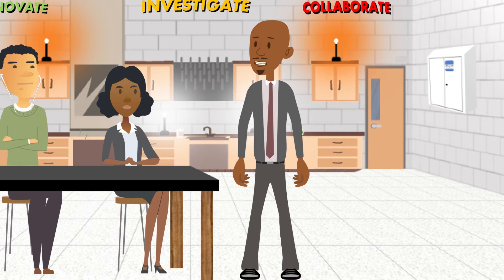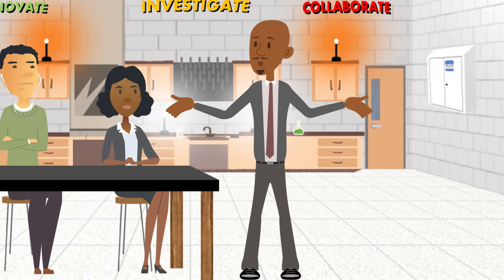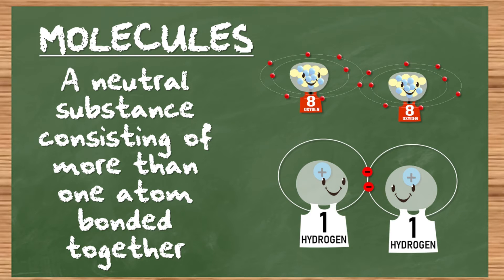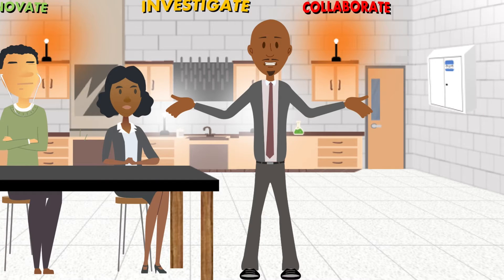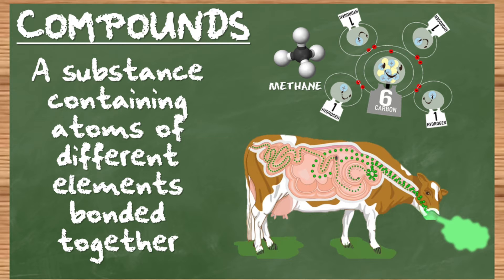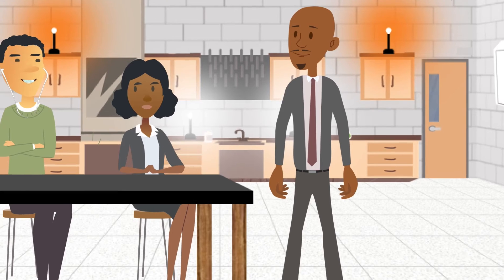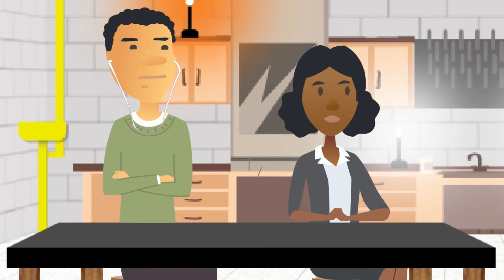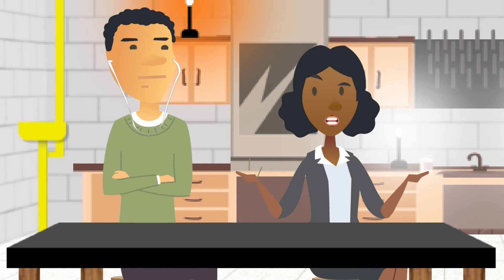If you get a bunch of oxygen atoms together, they don't usually stay apart — they bond together and form molecules like oxygen gas or hydrogen gas. Depending on how their electrons are feeling, they can hook up and make even more compounds that we love, like carbon dioxide and water. And some compounds that we kind of hate, like methane. Electrons make all of that possible.